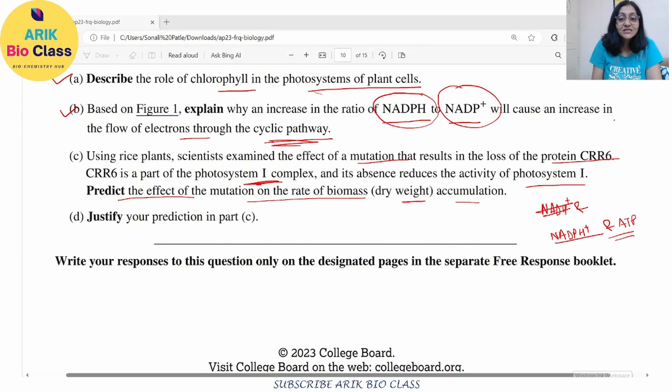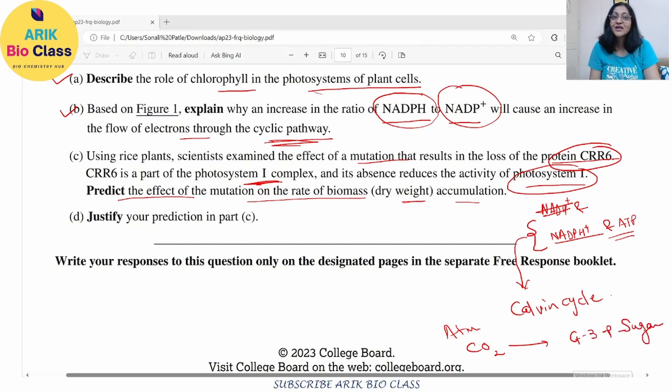So when this protein is mutated, the photosystem I is not functioning properly. These chemical compounds won't be formed properly. And see what happens as I had mentioned earlier also that these components, they enter to the Calvin cycle. And in the Calvin cycle, carbon dioxide, atmospheric carbon dioxide is fixed into G3P and then sugar molecule.